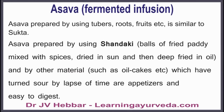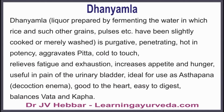Asava or fermented infusion: Asava prepared using tubers, roots, and fruits is similar in properties to Shukta. Asava prepared using Shandaki — balls of fried paddy mixed with spices, dried in sun and deep fried in oil — and by other materials that have turned sour by lapse of time are appetizers and easy to digest. Dhaniamla, liquid prepared by fermenting water in which rice, grains, or pulses have been slightly cooked or merely washed, is purgative, penetrating, hot in potency, aggravates pitta, cold to touch, relieves fatigue and exhaustion, increases appetite and hunger, cures pain of the urinary bladder, and is ideal for use in asthapana basti or decoction enema. It is good to the heart, easy to digest, and balances vata and kapha.